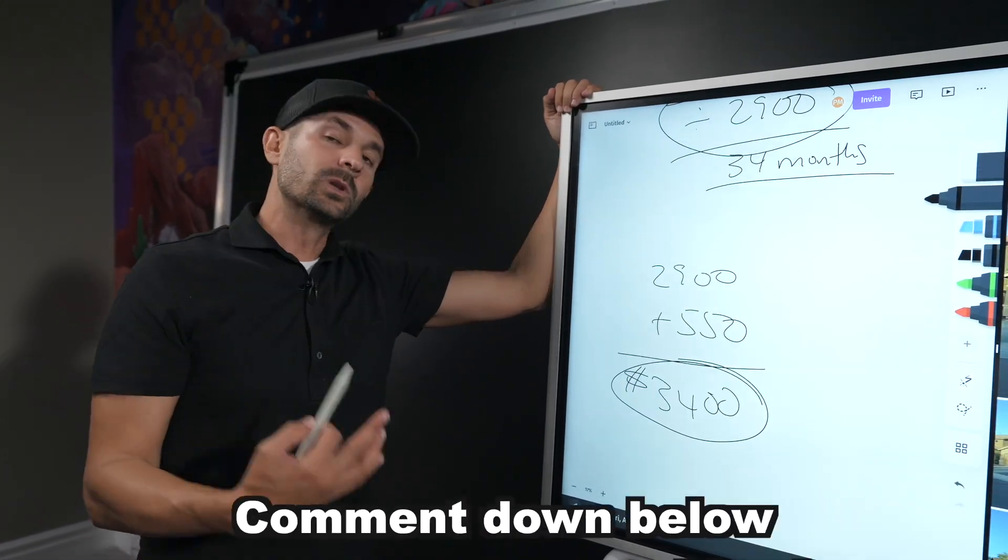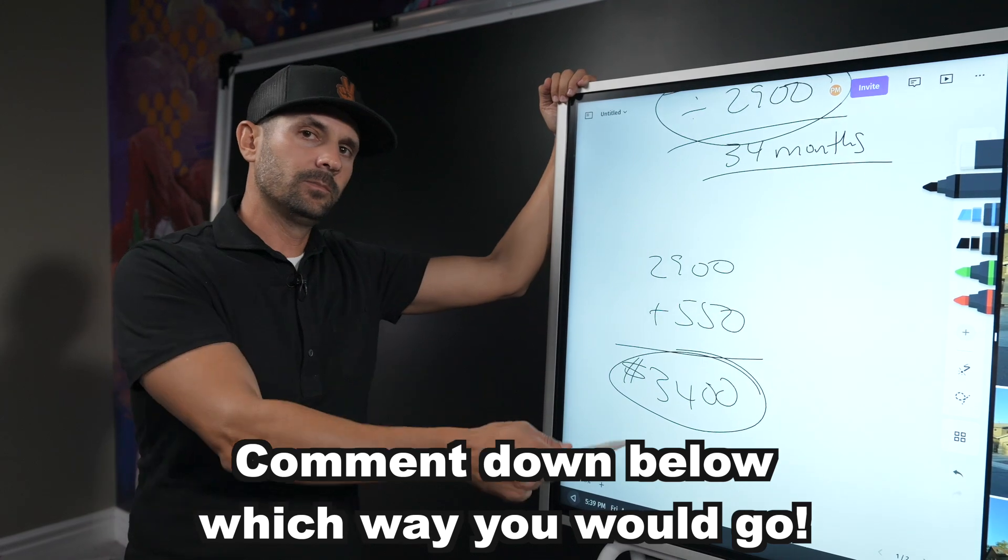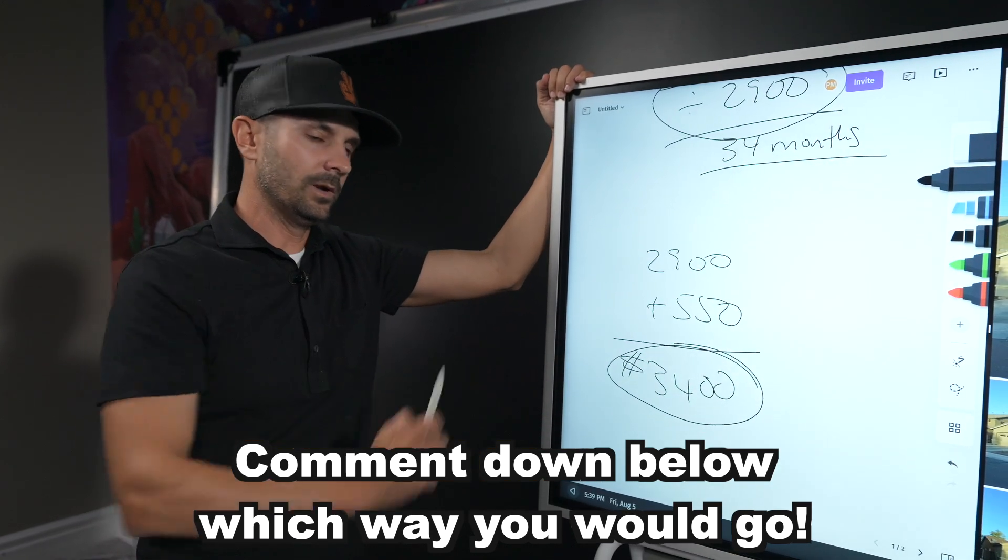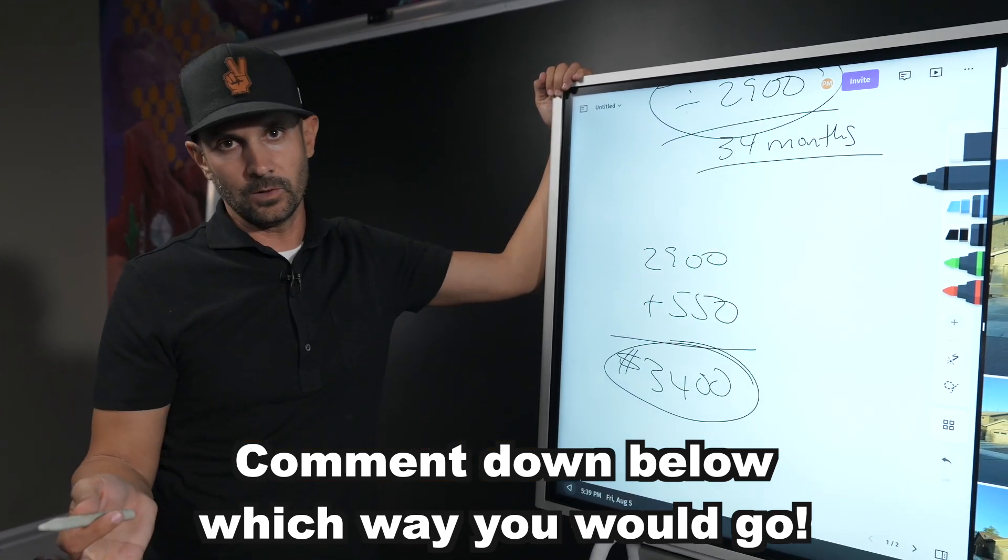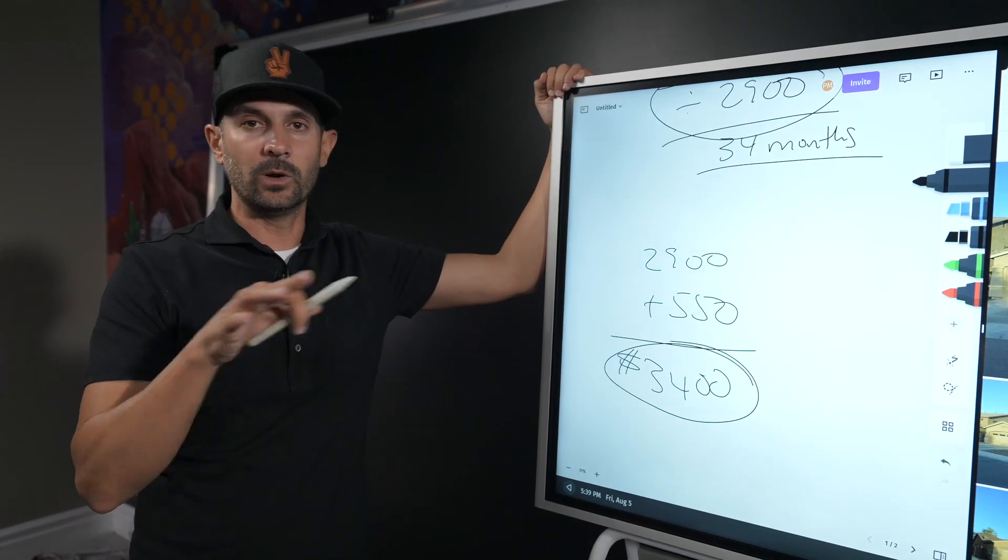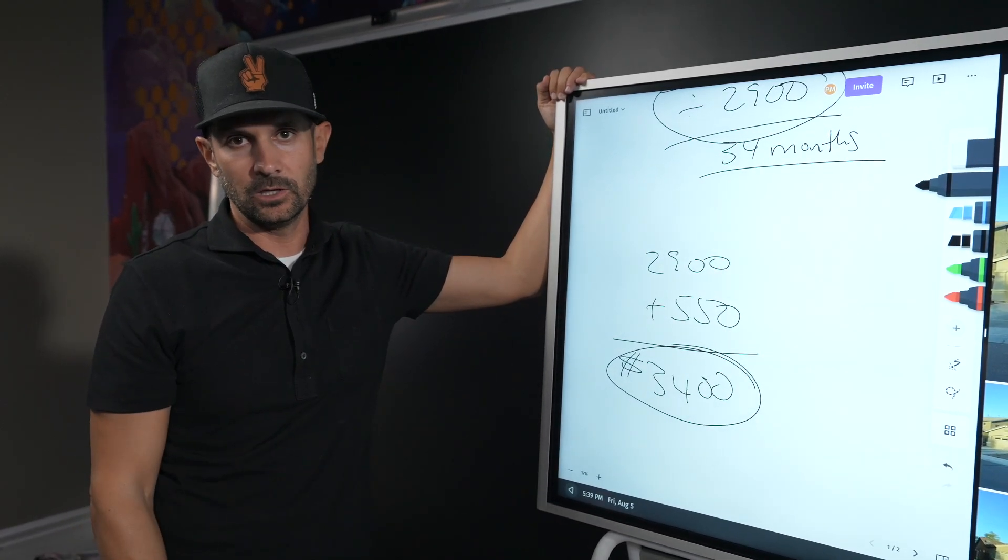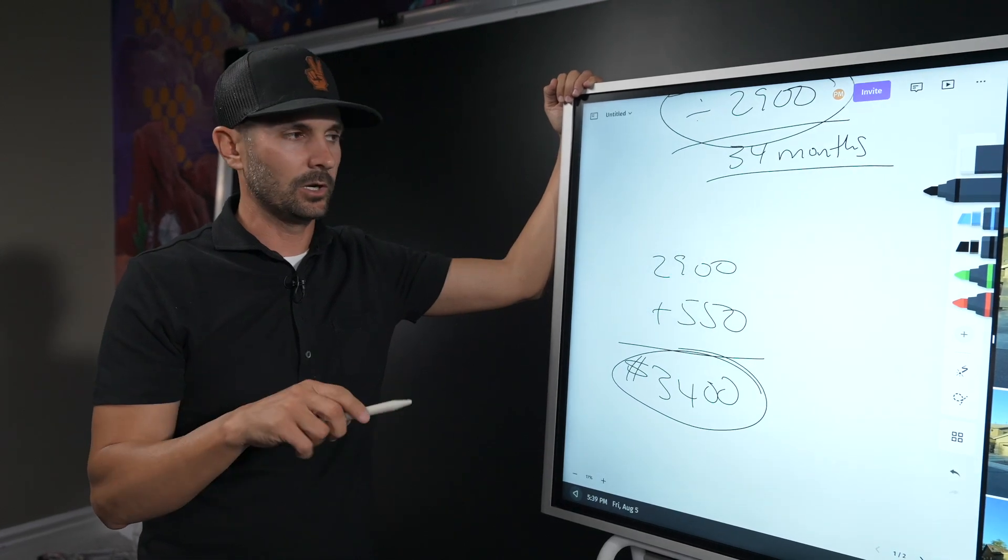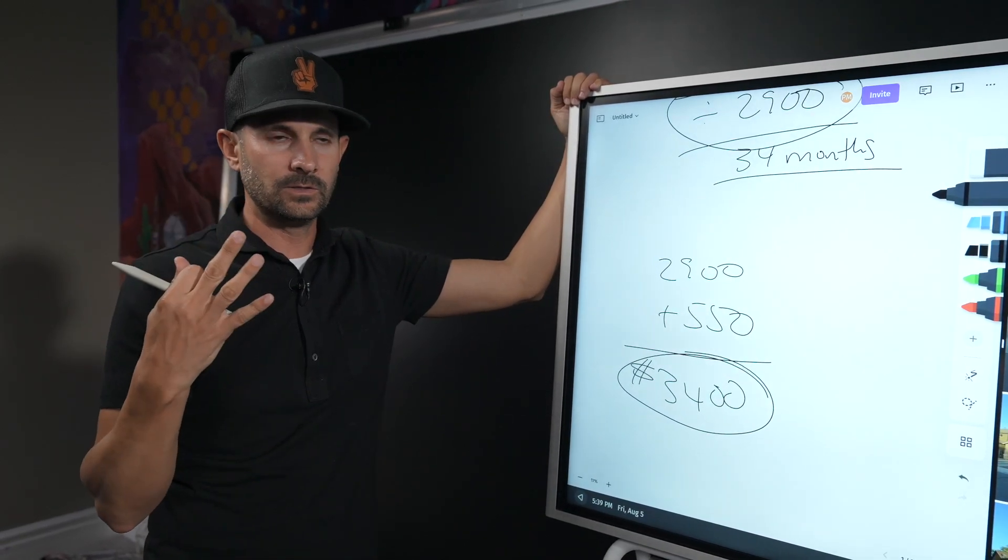So which way would you go? Would you guys go with the fix and flip, make $70,000, or would you go with the route of making cash flow for the rest of your life? Kind of depends on who you are, what resources you have, and ultimately what stage of the journey you're in.